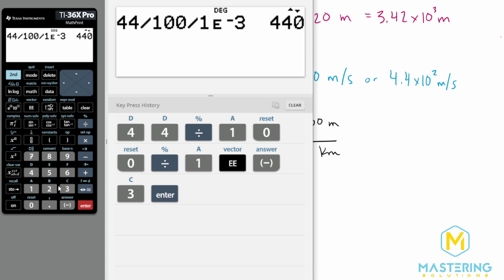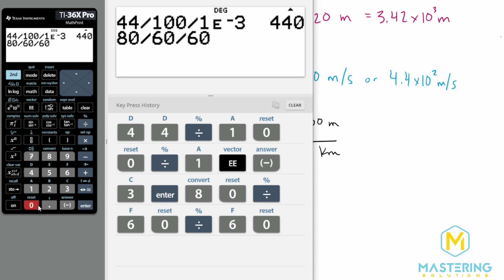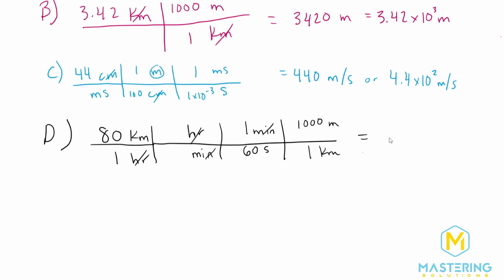So now we have 80 divided by 60 to put that into minutes, divided by 60 to put it into seconds, and then multiply it by 1000 to put it in meters per second. And that gives us a velocity of 22.22 meters per second, or rounded, 22 meters per second.